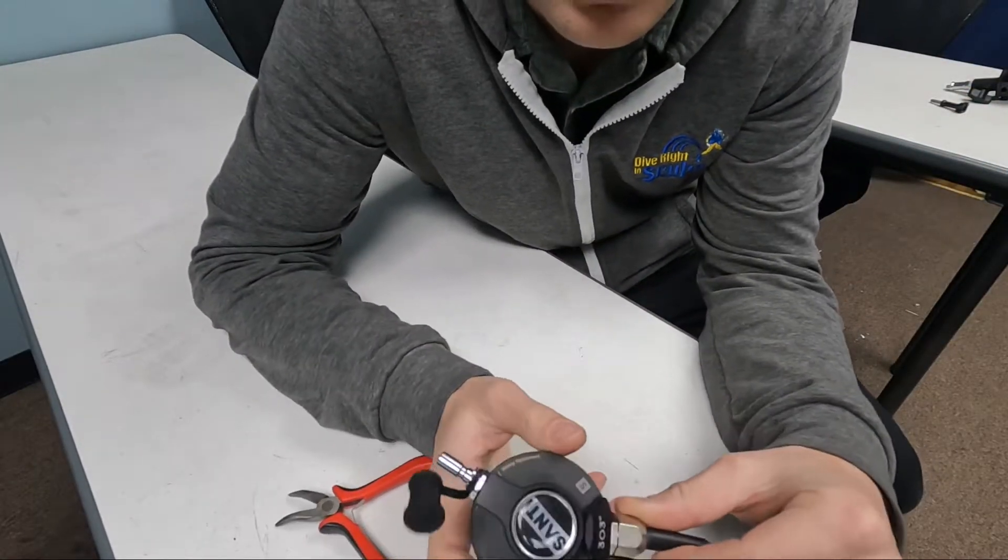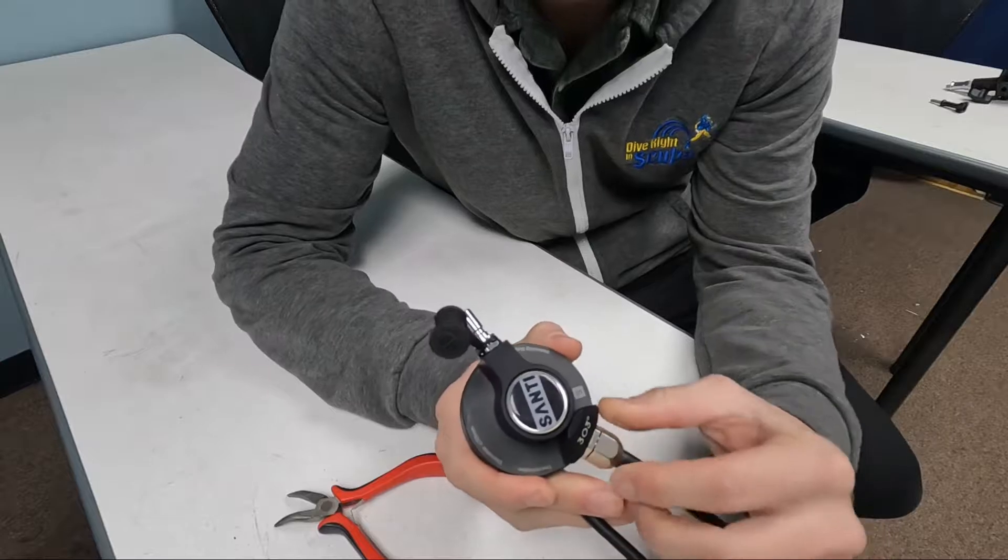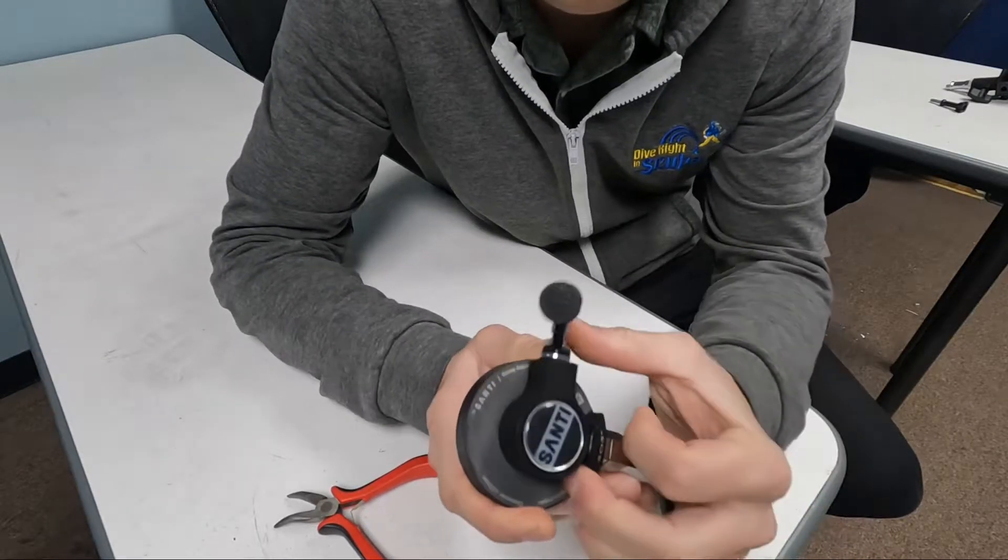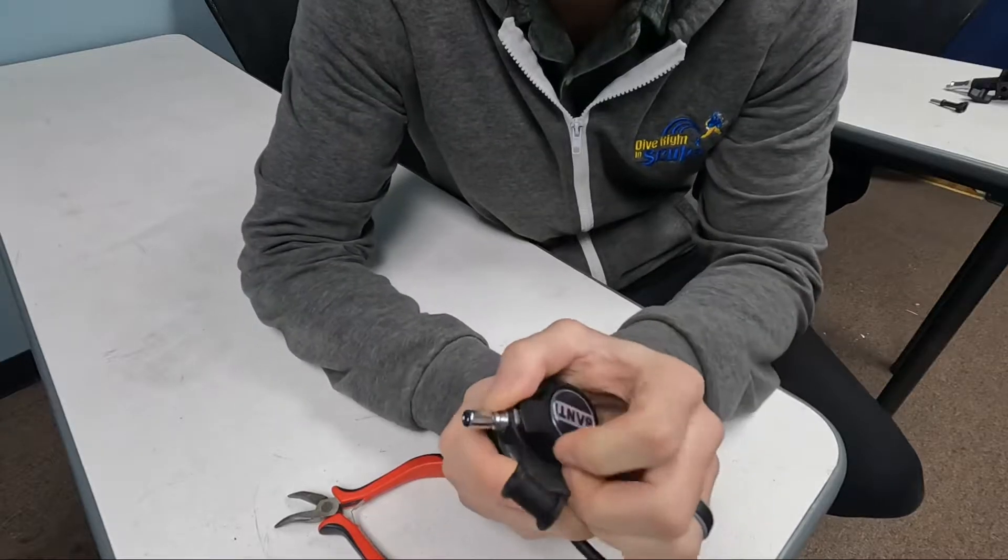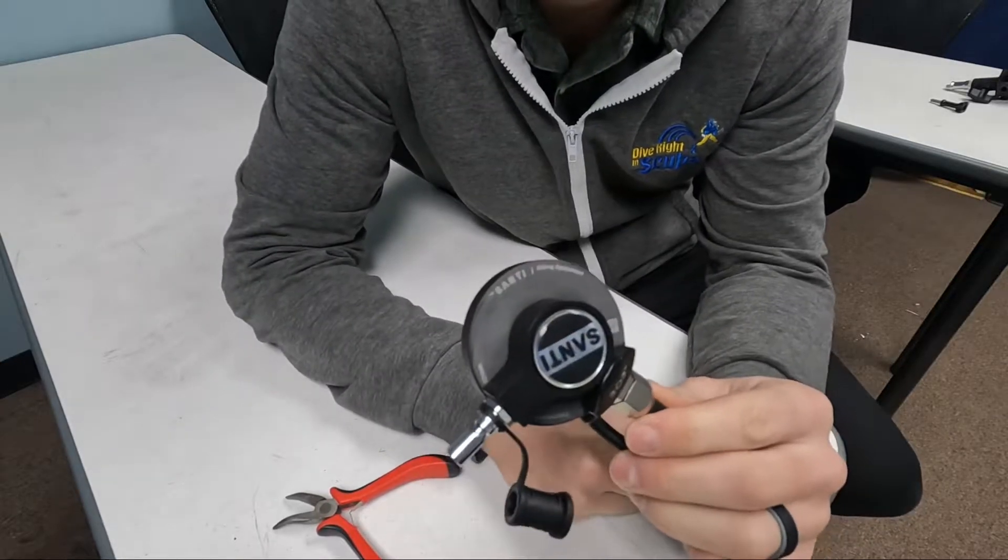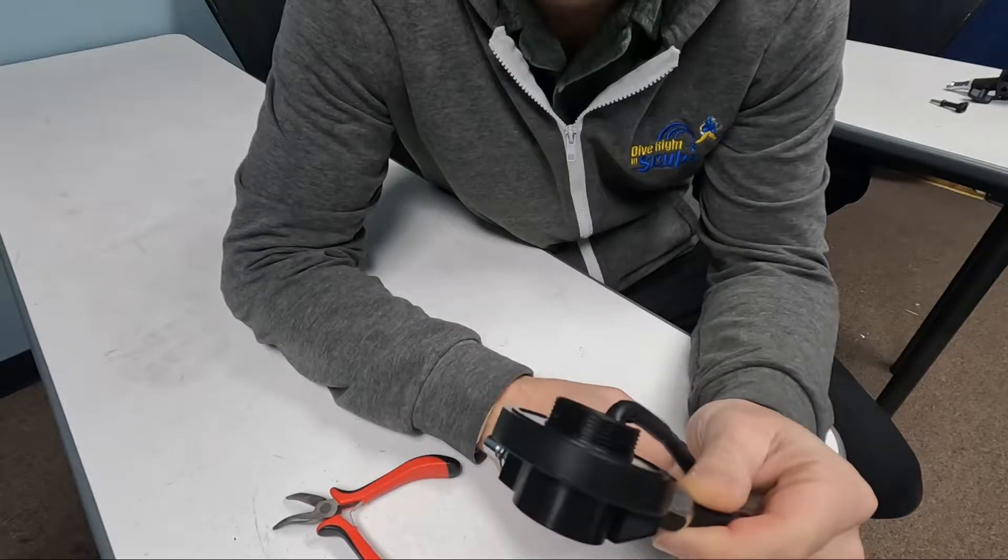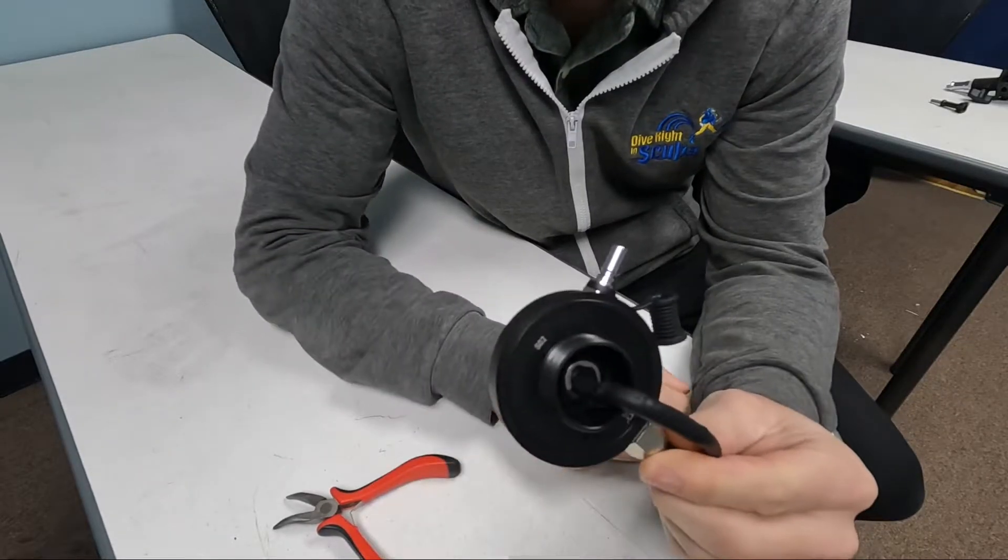Alright, so what we're working on today is the Santee Thermovalve 303. The complaint was auto-inflating, so these guys are really easy to work on. Let's go ahead and just show you how we break it down and how you can go ahead and put some new o-rings in there.